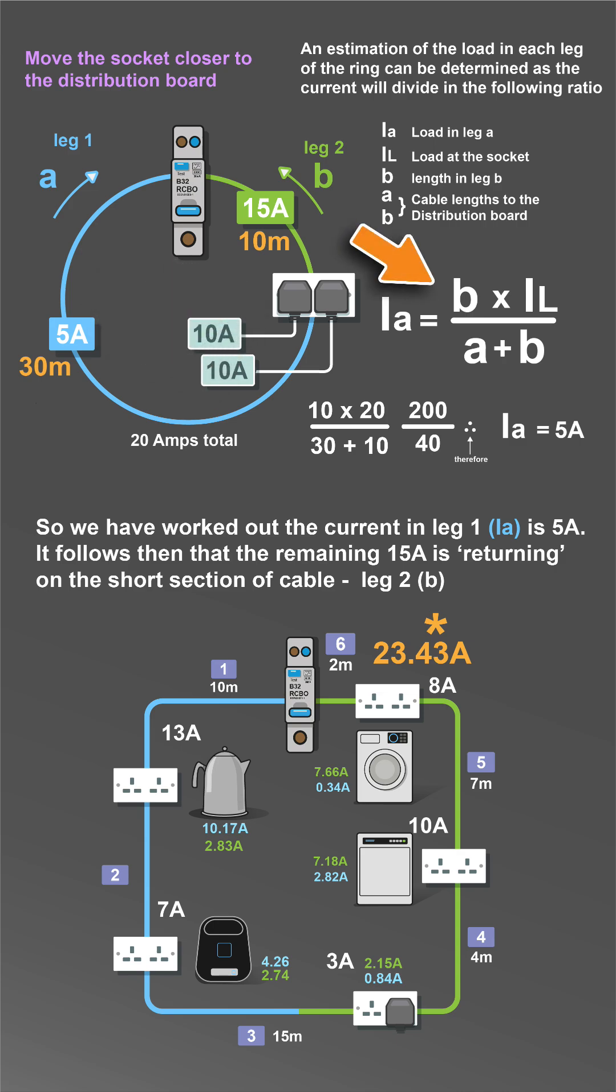An estimation of the load in each leg can be determined with this formula. So for a 20 amp load, 75% is in the 10 meter leg.